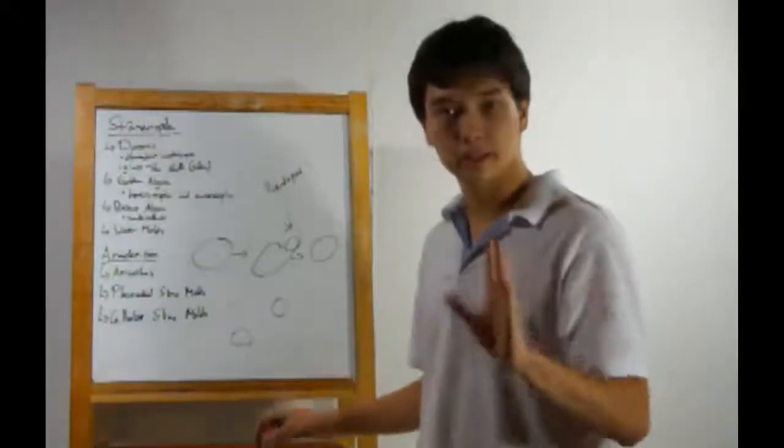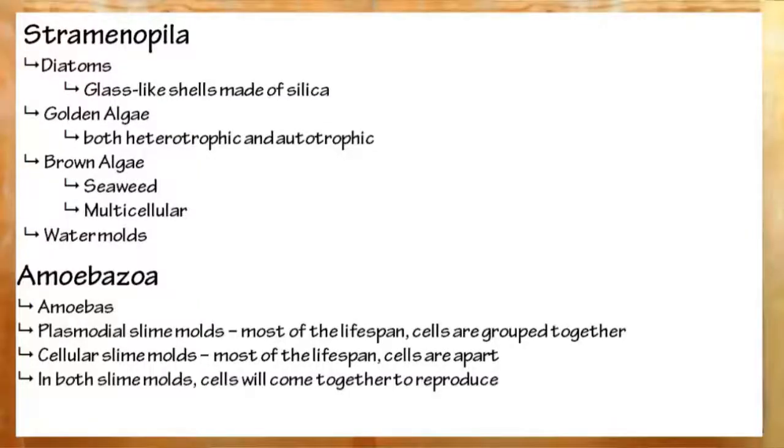Alright, to recap. This covers the second half of the protist lesson. Remember, the protist kingdom is rapidly dissolving into other different groupings, as we discover DNA evidence and structural evidence for different groupings of protists. First up, stramenopila. This consists of diatoms. These are abundant underwater and have glass-like shells made up of silica.